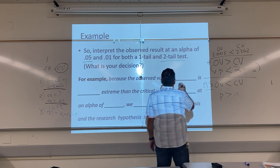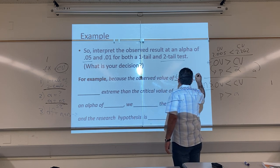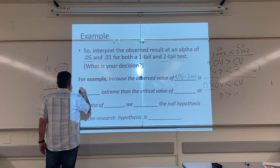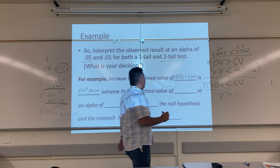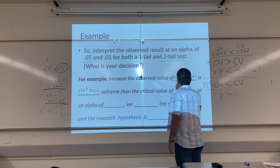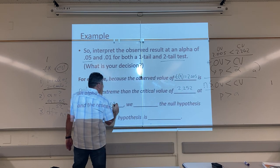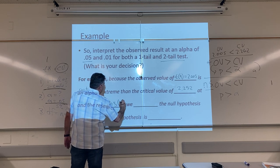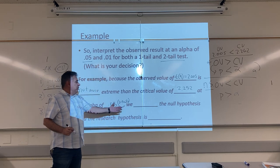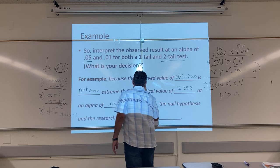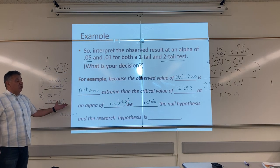because the observed value of T with 9 degrees of freedom equal 2.005 is not more extreme than a critical value of 2.252, at an alpha of 0.05, this was two tails, what did we do? We retain the null hypotheses. Why? Because our results were non-significant.